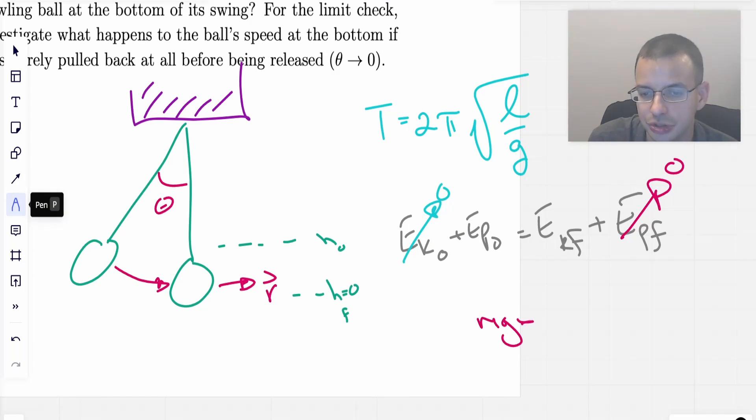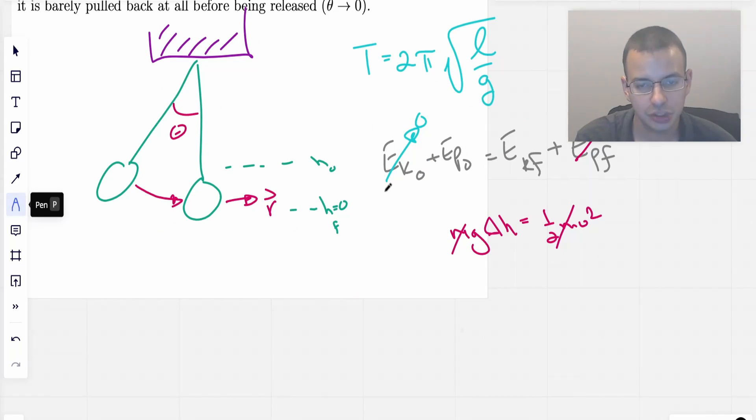So then when I rewrite this, I get mg, I'm going to use delta H, because I'm really concerned with the change in height, not the actual height. 1 half mv squared, the masses cancel, which is good because we don't know what they are.